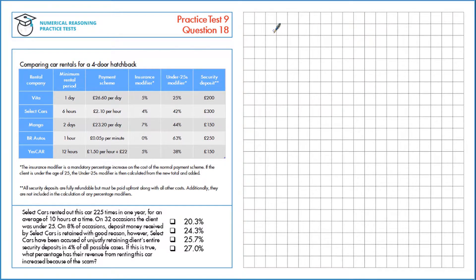SelectCars rented out this car 225 times in one year for an average of 10 hours at a time. On 32 occasions, the client was under 25. On 8% of occasions, deposit money received by SelectCars is retained with good reason. However, SelectCars have been accused of unjustly retaining clients' entire security deposits in 4% of all possible cases. If this is true, what percentage has their revenue from renting this car increased because of the scam?